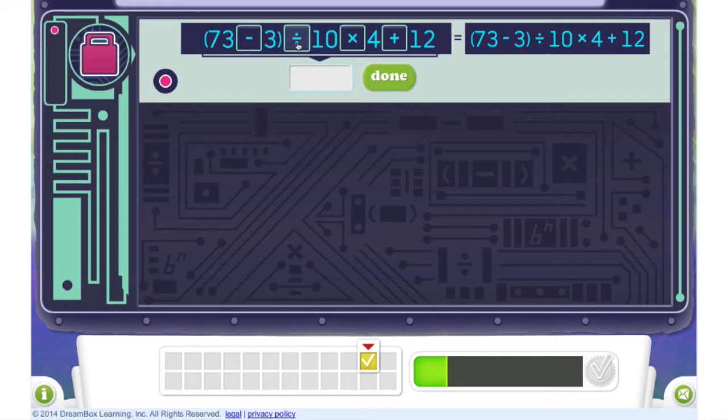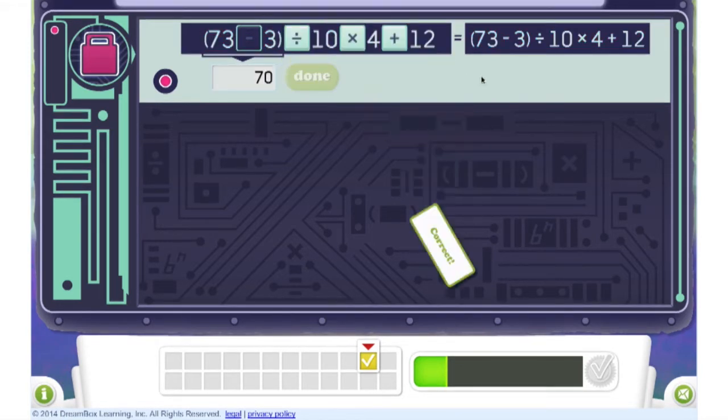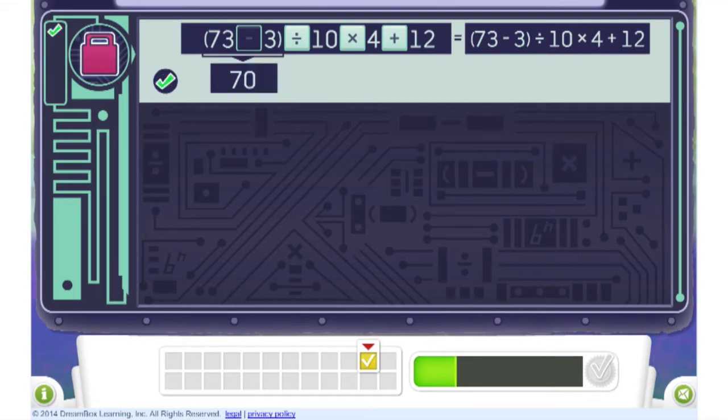As students try different buttons, they see how much of the original problem they have to solve depending on which operation they choose first. In this expression, parentheses must be solved first.